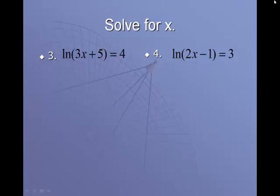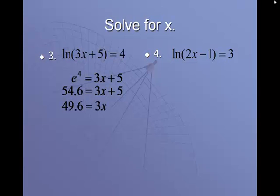So on number 3, we have a natural log. We're going to use e to solve this. E is my base. I'm going to raise it to the power of 4, and I'm going to set it equal to 3x plus 5. The 4 comes to the left side. 3x plus 5 goes to the right side. E to the power of 4 can be evaluated in our calculator. E to the power of 4 is 54.6. And now if I set this equal to 3x plus 5, I'm going to subtract 5 to get 49.6. I'm going to divide by 3 to get 16.5 for a final answer.